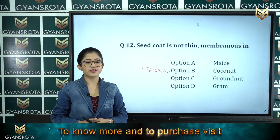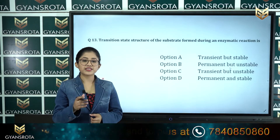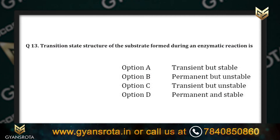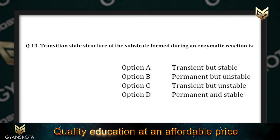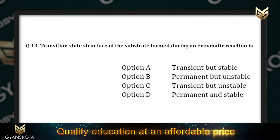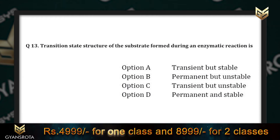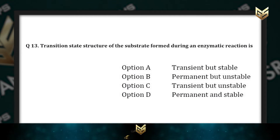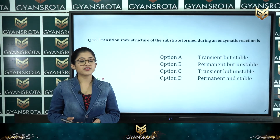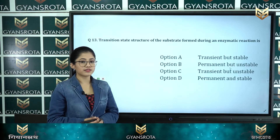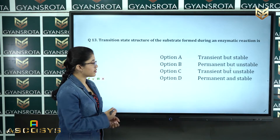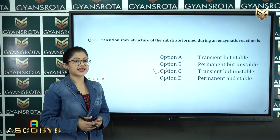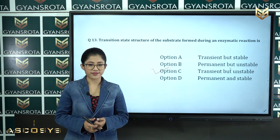Question number thirteen: the transition state structure of the substrate formed during an enzymatic reaction is — option A: transient but stable, option B: permanent but unstable, option C: transient but unstable. This is from the chapter biomolecules. The correct answer is option C — transient but unstable.